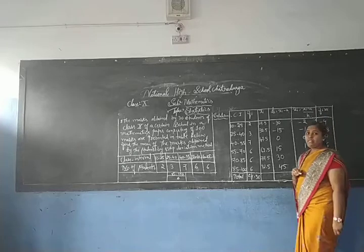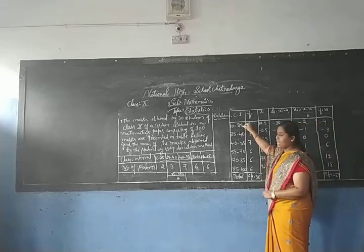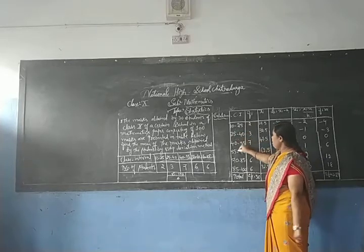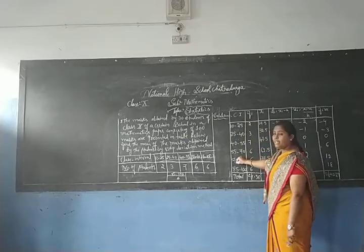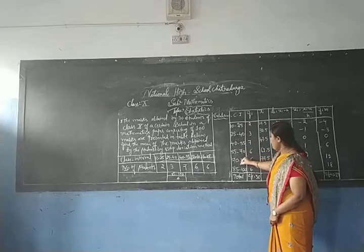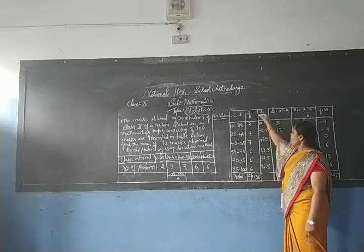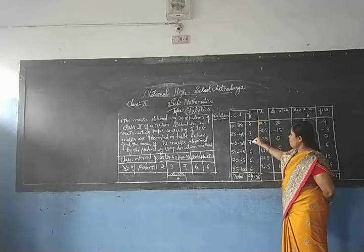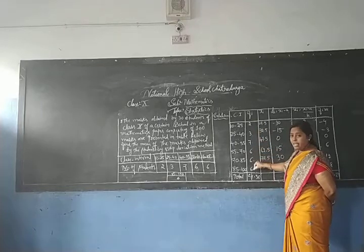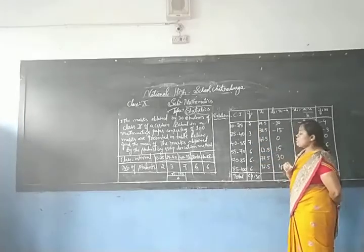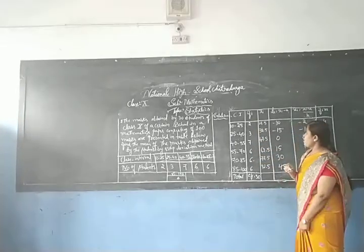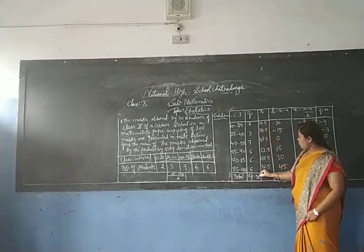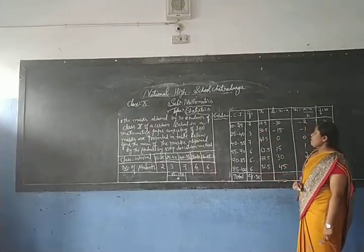For the class interval column, we write them as they are: 10–25, 25–40, 40–55, 55–70, 70–85, 85–100. The frequencies are written as they are: 2, 3, 7, 6, 6, 6. Adding all frequencies gives the total: sigma fi equals 30.